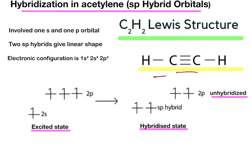The electronic configuration of carbon is 1s2, 2s2, 2p2. The ground state electronic configuration of carbon is 1s2, 2s2, 2px1, and 2py1. So there are only two unpaired electrons in the ground state.